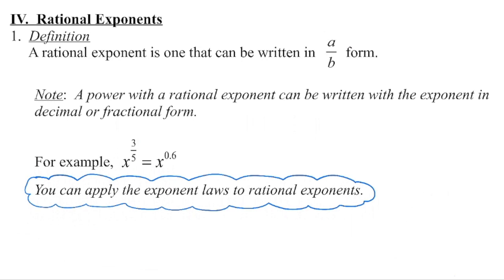So if you see an exponent of 0.6, this is a power with a rational exponent because six-tenths is equivalent to three-fifths. If we can write that decimal as a fraction, it is a rational exponent, and we're going to use the same exponent laws that we've been using in order to simplify those expressions.